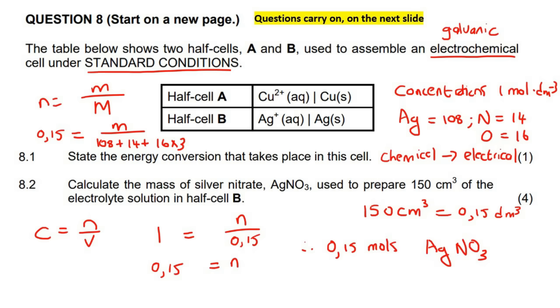you would say silver plus nitrogen, and then three oxygens, so that would be 16 times 3. And then we could say 0.15 equals to mass over, this would actually become 170. And then if we had to go work out the mass, you would end up with 25.5, and then this would be in grams.